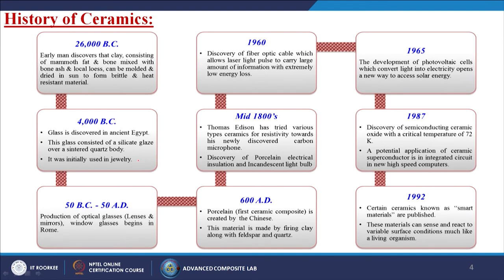From 50 BC to 50 AD, production of optical glasses, lenses, mirrors, and window glasses began in Rome, Italy. By 600 AD, porcelain — the first ceramic composite — was created by the Chinese, made by firing clay along with feldspar and quartz. Moving to the mid-1800s, Thomas Edison tried various types of ceramics for resistivity towards his newly discovered carbon microphone, leading to the discovery of porcelain electrical insulations and the incandescent light bulb.